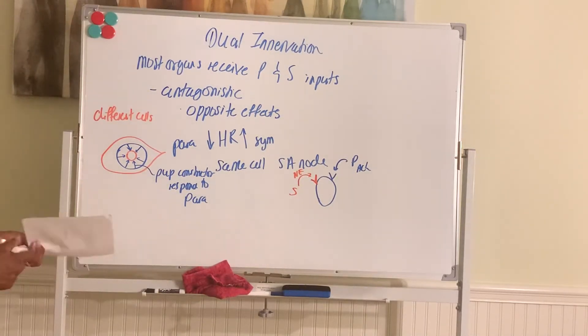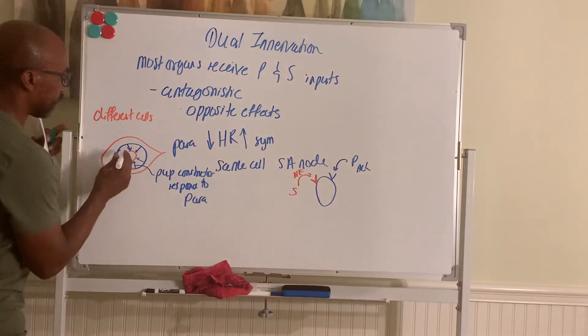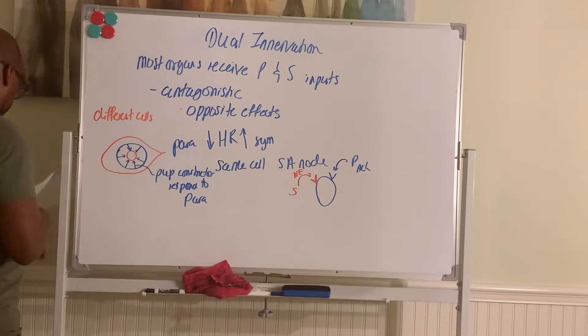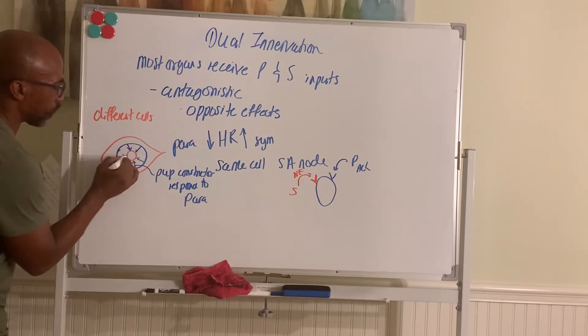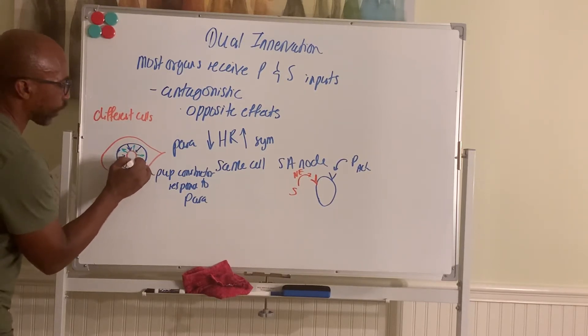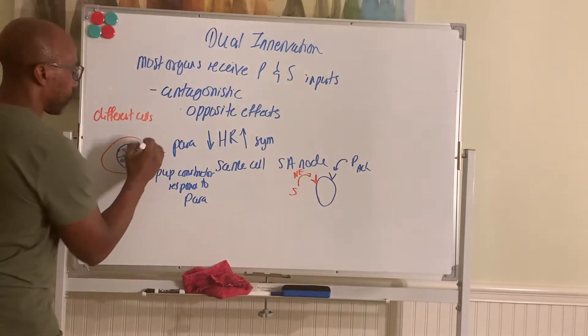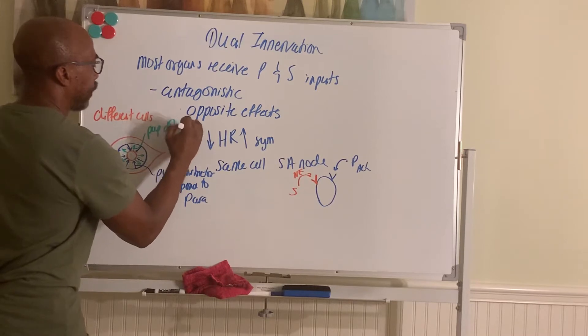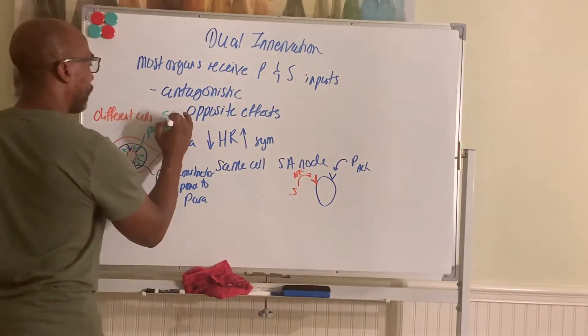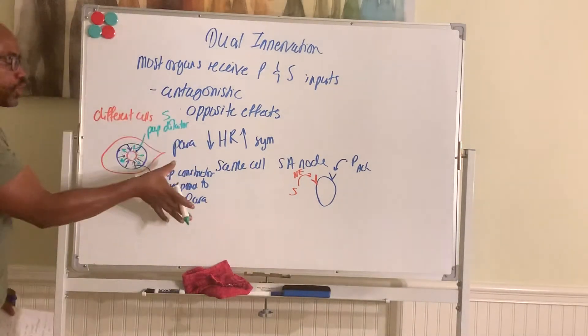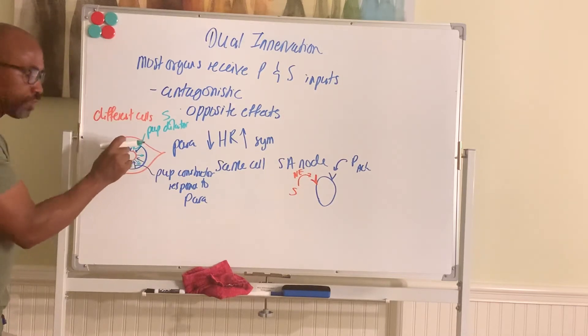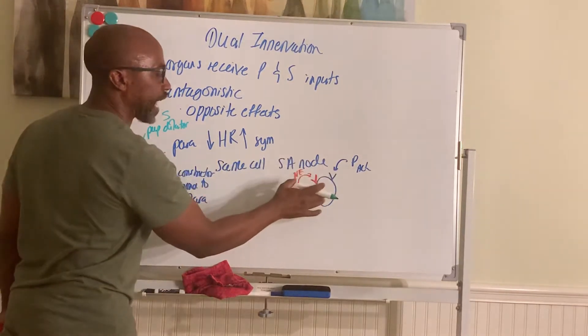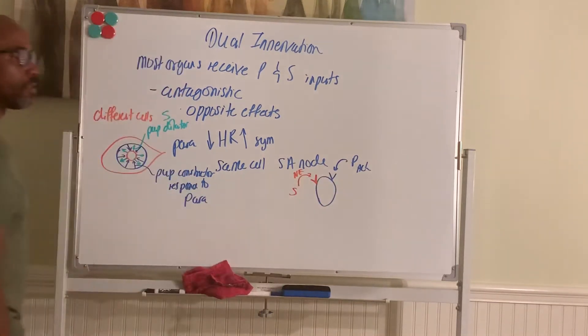And then you have muscles in the iris to make the pupil wider. So these muscles we call your pupillary dilator muscles. And they respond to simpa. So here's an example where both divisions act in the same target, the same iris, but they use different cells in there. Over here, both divisions act on the same exact cells in the organ. So you can have it both ways, use same cells or different cells to respond to each division.